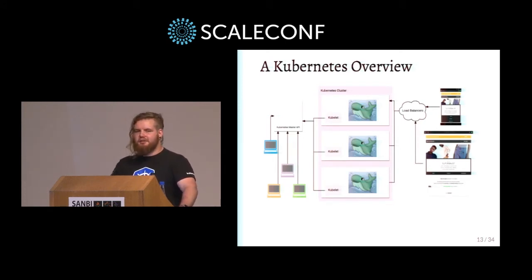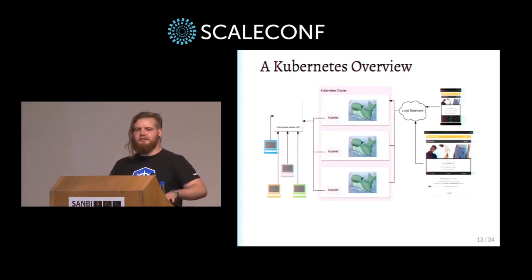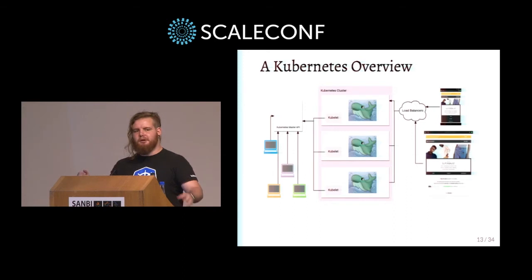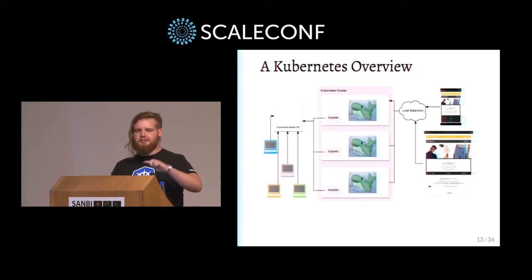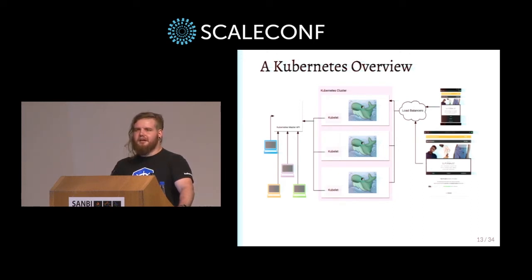The load balancers configured within the cluster and the deployments are completely separate things. You could have a load balancer that load balances over two completely separate apps. When defining a deployment, you define a set of labels. On the load balancer, you also define labels - so it just finds all healthy pods with matching labels and configures iptables on each node to redirect traffic to one of those healthy pods. It was confusing at first because changes to a deployment would cause the load balancer to stop serving traffic if pod labels no longer matched.